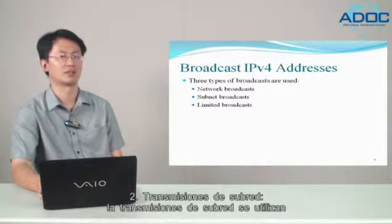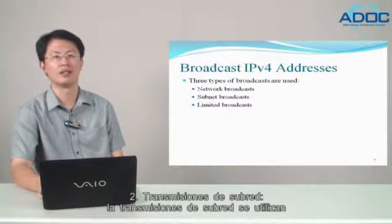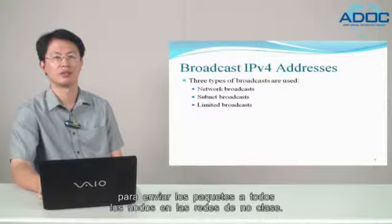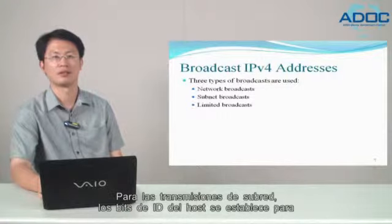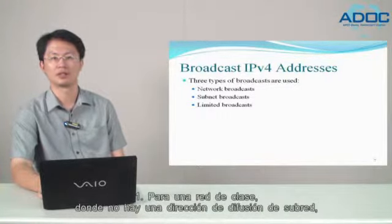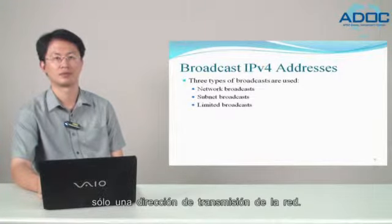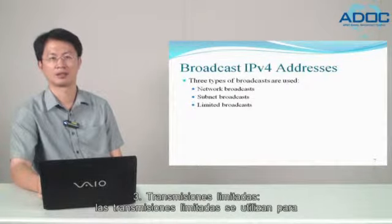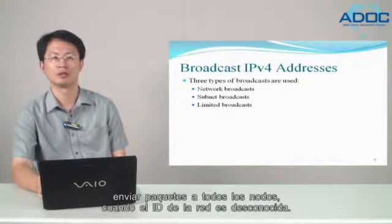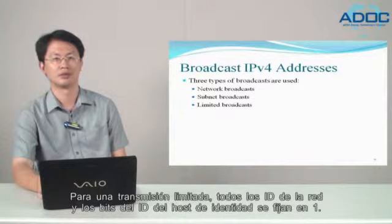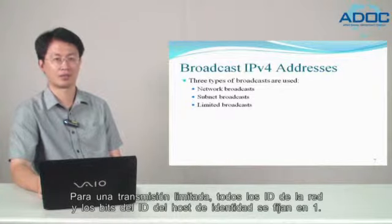Second, subnet broadcasts. Subnet broadcasts are used to send packets to all nodes on non-classful networks. For subnet broadcasts, the host ID bits are set to 1. For a classful network, there is no subnet broadcast address, only a network broadcast address. Third, limited broadcasts. Limited broadcasts are used to send packets to all nodes when the network ID is unknown. For a limited broadcast, all network ID and host ID bits are set to 1.